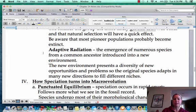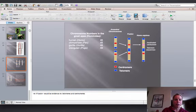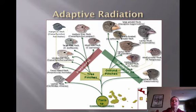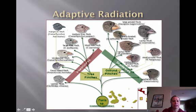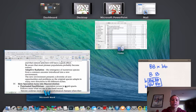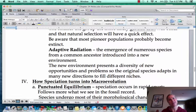Another thing to talk about is adaptive radiation, which is what they think happened in the Galapagos Islands. Adaptive radiation is where one individual or one species evolves into a whole bunch of different species over a very short period of time — think of them all radiating out from one original species. This can happen quickly because when they moved to those islands there was really nothing there, so there were lots of ecological niches to fill. They all get specialized in their own niche because they don't want to compete with one another, producing a whole bunch of different species.